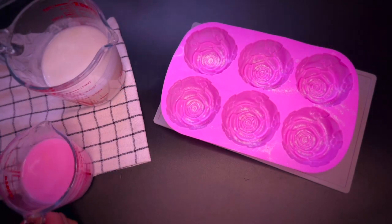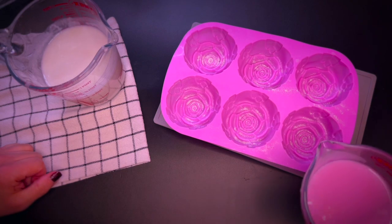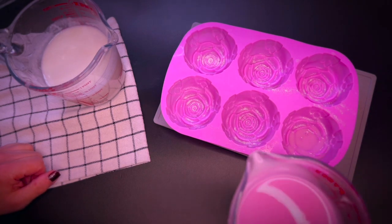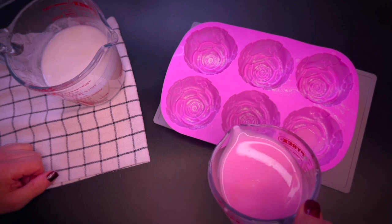To achieve a gradient look on the top of the soap, I start by drizzling a little bit of the pink soap into the bottom of the mold and give it some time to harden up a bit.